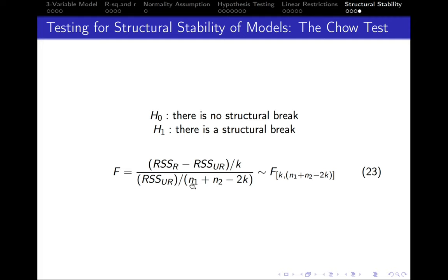In the denominator we've got the residual sum of squares from the unrestricted model divided by n1 plus n2, so the number of observations from the first model plus the number of observations from the second model. Instead of having n1 plus n2 we can just have n, because n1 plus n2 is equal to n, so this is the total number of observations minus 2k.